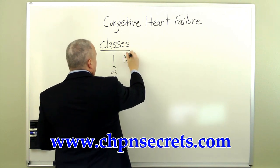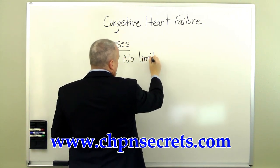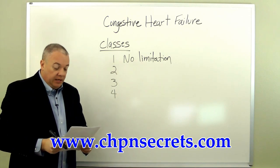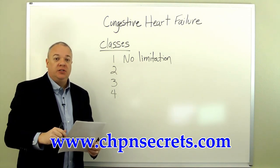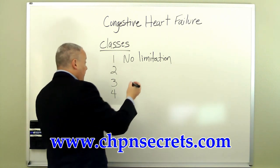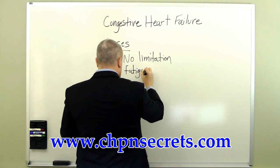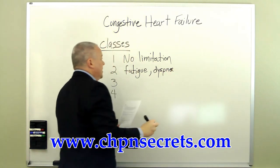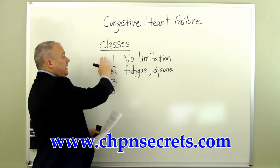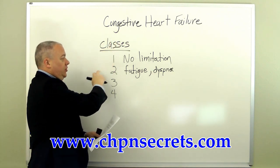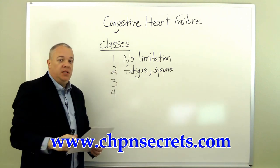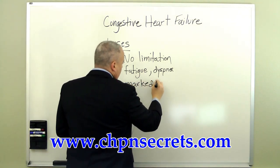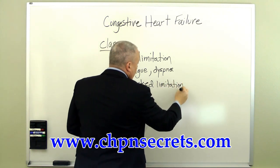In Class 1, they have congestive heart failure but there is no limitation in their normal physical activity. In Class 2, they start to recognize more marked symptoms during normal physical activity — these symptoms include fatigue, dyspnea, and others. So for Class 1 there are no limitations whatsoever, while Class 2 results in fatigue or dyspnea with normal physical activity.